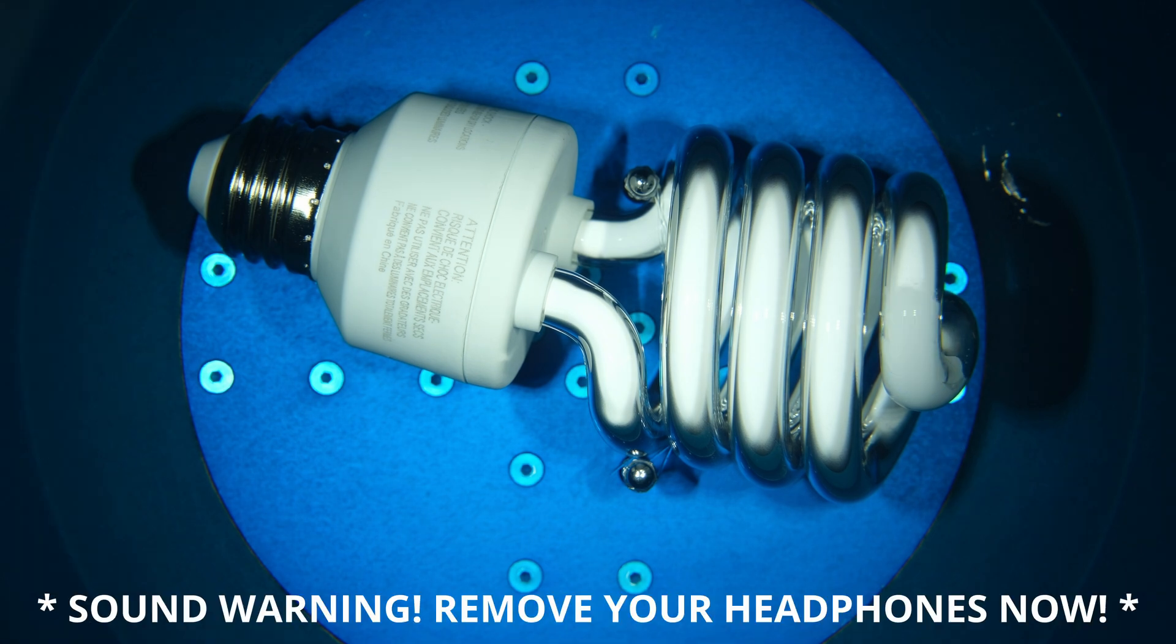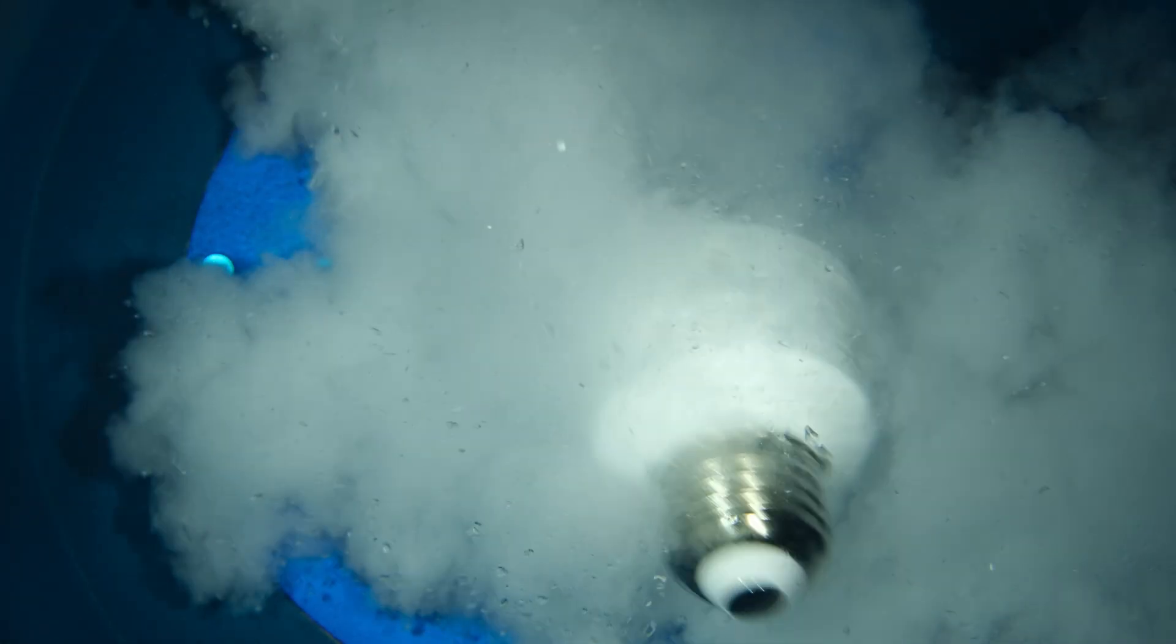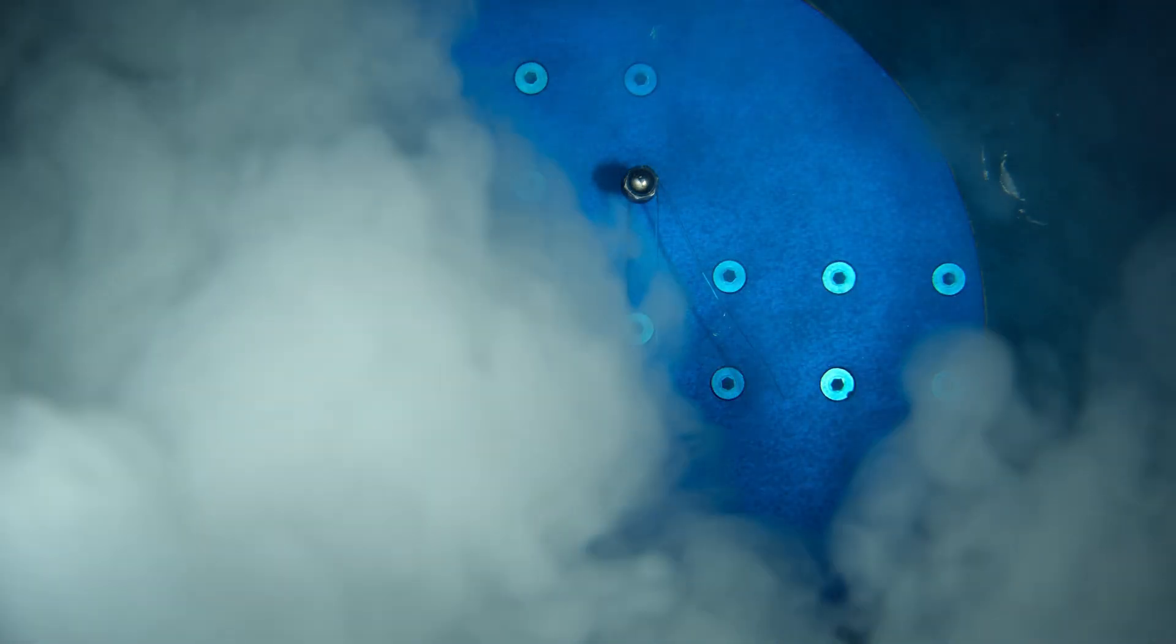After that point, an implosion occurs at 966 meters, and the pressure shockwave ruptures the entire coil, pulverizing the glass in an instant, transforming it back to a silica sand and leaving a white cloud of phosphor in its wake.